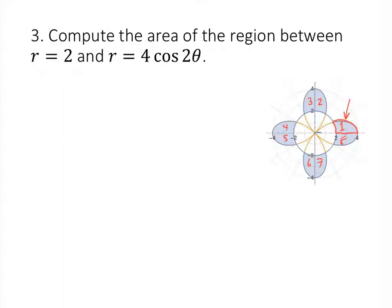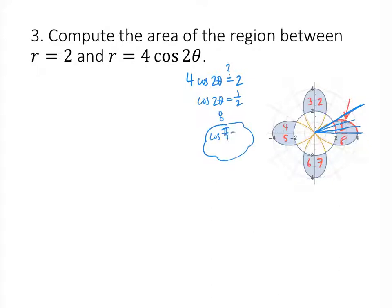To set up the integral, I'll think radially again. Starting at theta equals 0 and rotating counterclockwise, I reach the end of the region where the circle and the four-leaf clover cross each other. Where does 4 cosine 2 theta equal 2? Dividing both sides by 2, cosine of 2 theta equals 1/2. Since cosine of pi over 3 equals 1/2, one solution is theta equals pi over 6, which fits the picture — around 30 degrees is where the two curves cross.